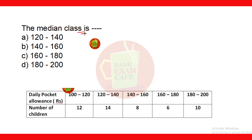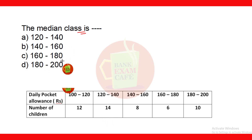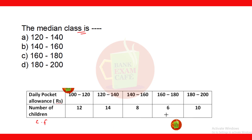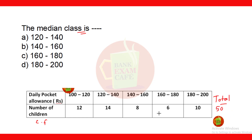The next question asks for the median class. The options are: 120–140, 140–160, 160–180, or 180–200. The median class is the range where the median lies. To find it, we use cumulative frequency. First, the total number of children: adding all frequencies gives a total of 50. So n = 50.